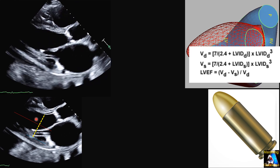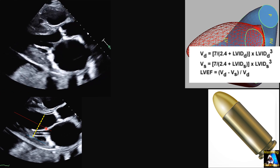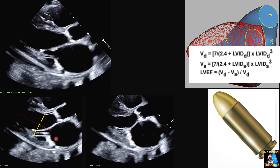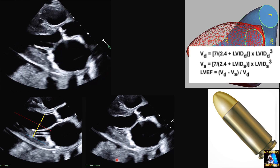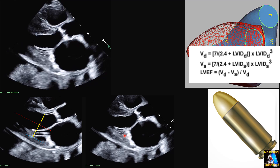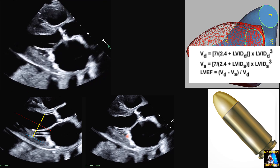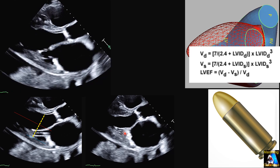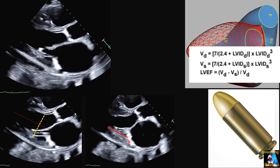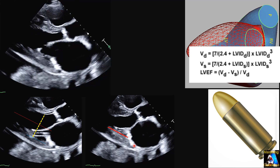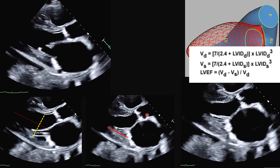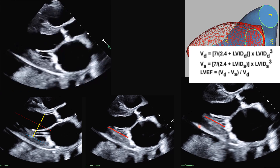This is the end-diastolic measurement. Then we repeat the process using the cine loop, going back and forth to confirm the compact endocardium, especially at the posterior wall. As you can see, there are chordae tendineae and some trabeculations here, so we go back and forth at different timing to confirm where the compact endocardium is, and when we identify it we proceed to the end of systole.